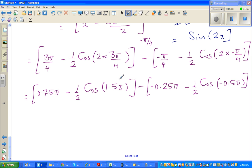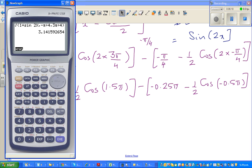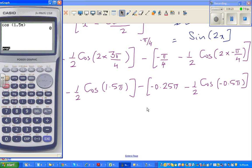I'll use my calculator to figure out what is this. So cos 1.5 shift pi is 0. So this is 0. This whole thing will become 0. And what is cos minus 0.5 pi? Cos minus 0.5 shift pi is also 0. So this whole thing will become 0.